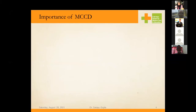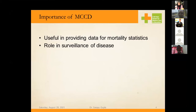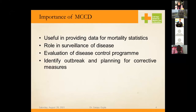If the cause of death certificate is filled up as per prescribed guidelines, it provides data for mortality statistics — how many people have died and how many are living. The government can thereby determine who may be receiving benefits like pensions and how to channelize resources based on population age groups. This certificate also plays a great role in surveillance of disease, enabling identification of whether a condition is endemic, epidemic, or pandemic in nature, and facilitating evaluation of disease control programs.